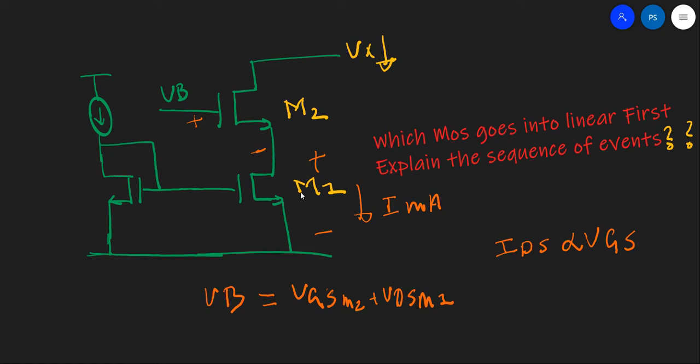Now let's assume that we are moving VGS, the Vx is reducing. So what will happen? This node voltage is not going to move. Why? Because as long as this MOS is in saturation, the VDS change is not going to affect the current. So the VGS will not change. So the VGS is constant as long as this MOS is in saturation.